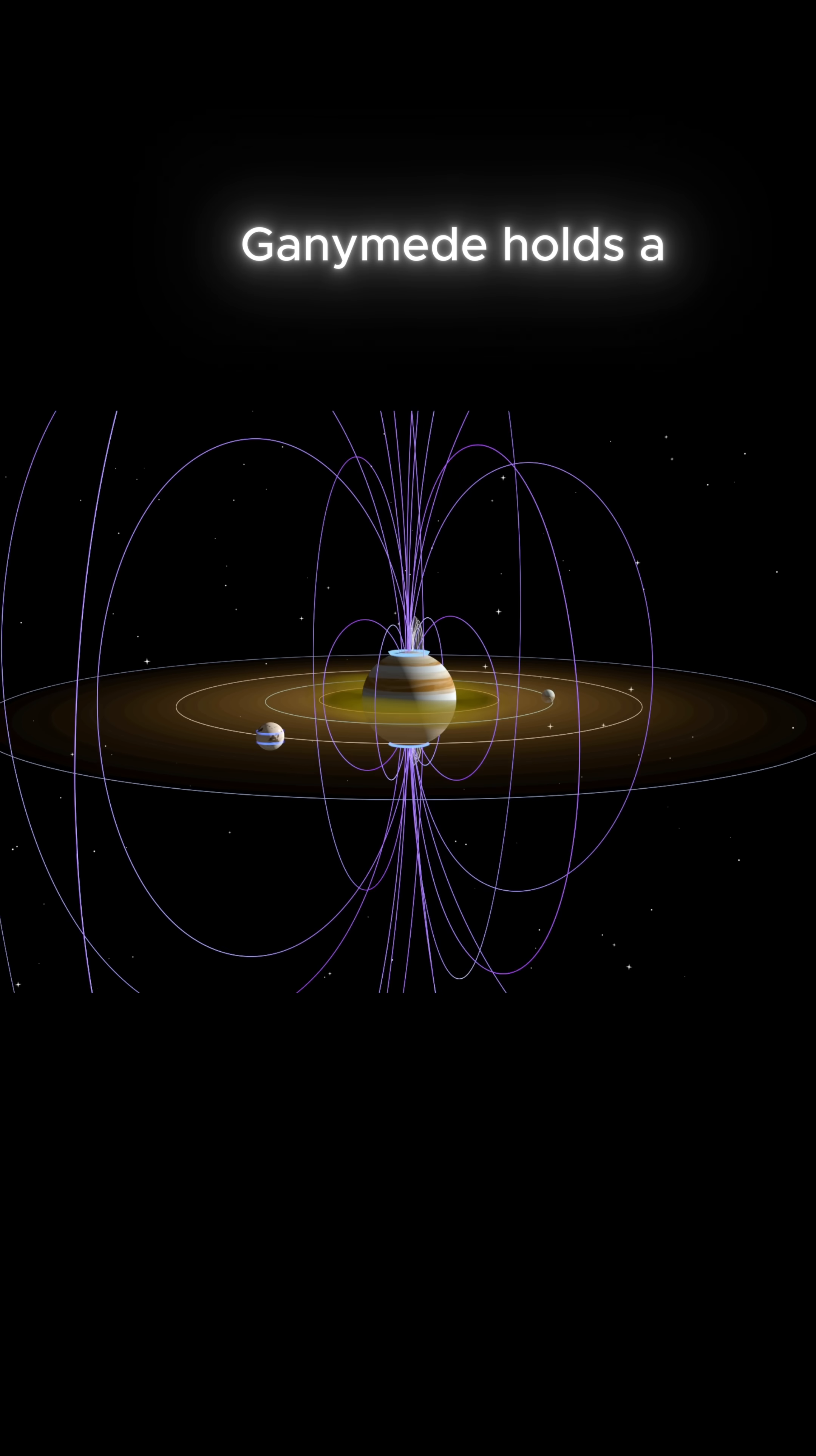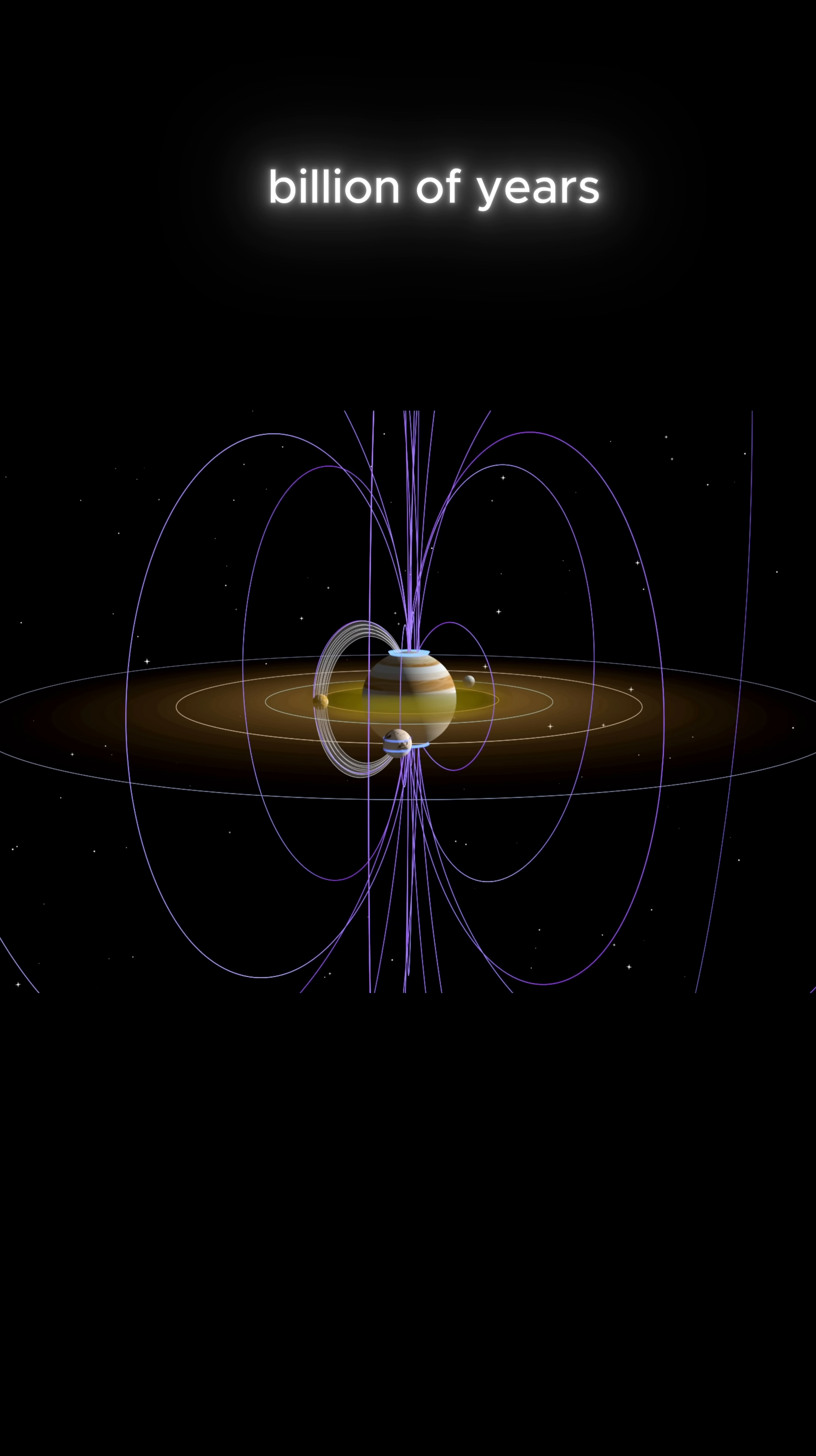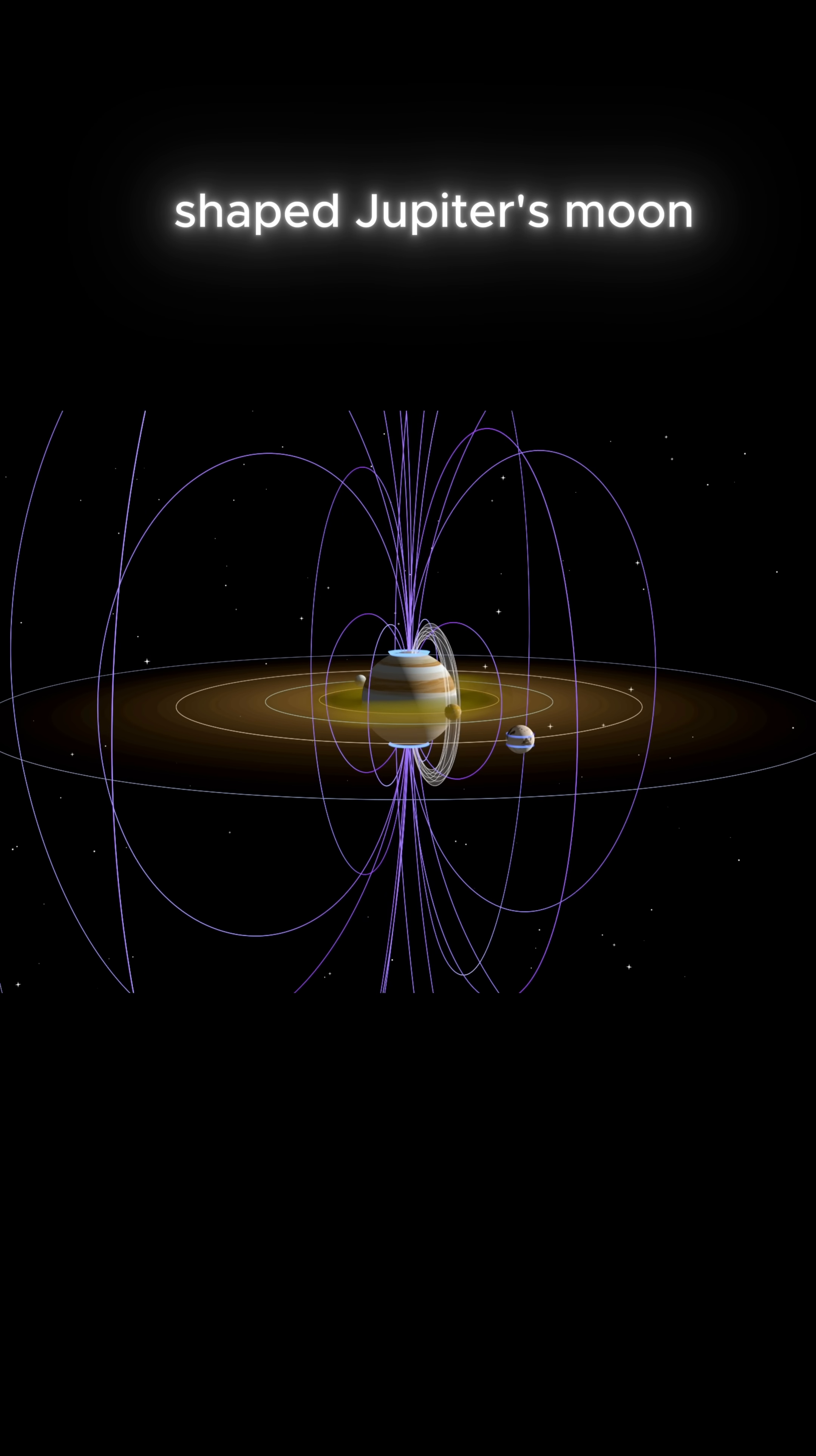Ganymede holds a unique position in the Jupiter system in terms of its geology and evolution, providing a window into the history of the system over several billion years. By studying Ganymede's surface features, scientists can gain insight into how impacts from space and geological processes such as tectonics have shaped Jupiter's moon over time.